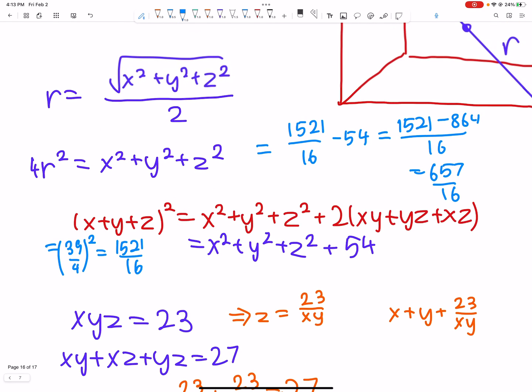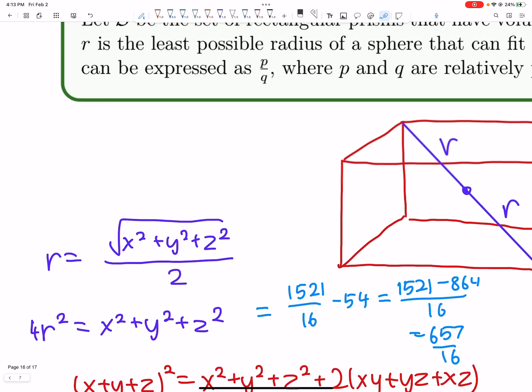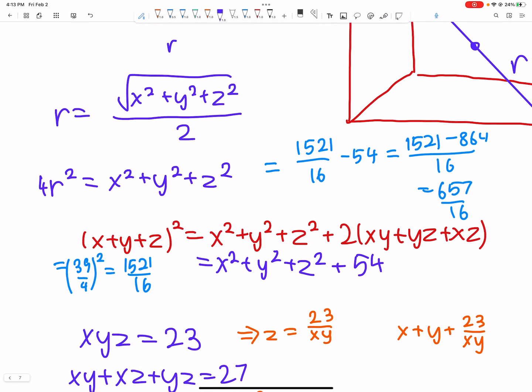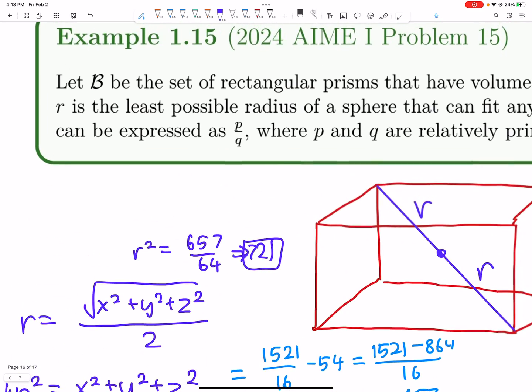So, R squared is 657 over 64. And that gives an answer of 721. Which is the final answer for this problem.